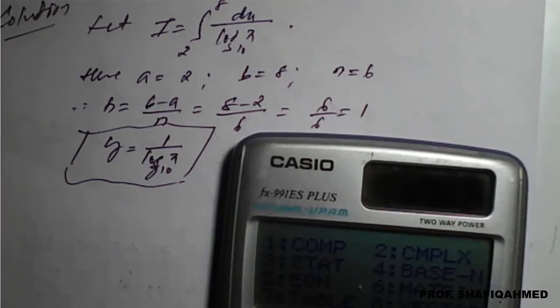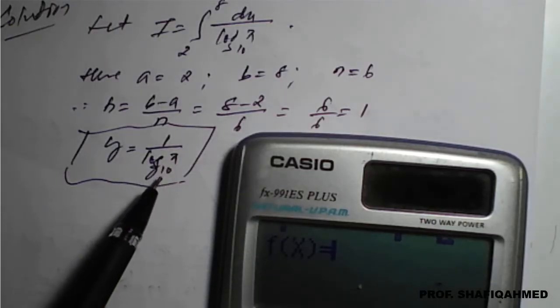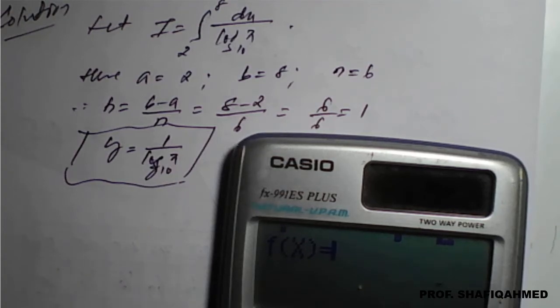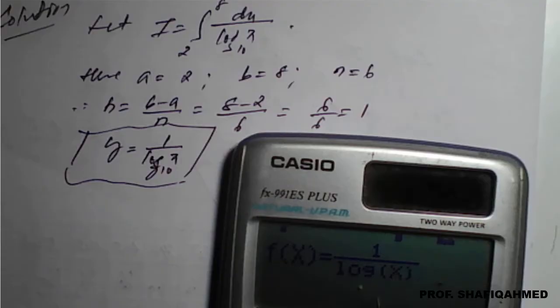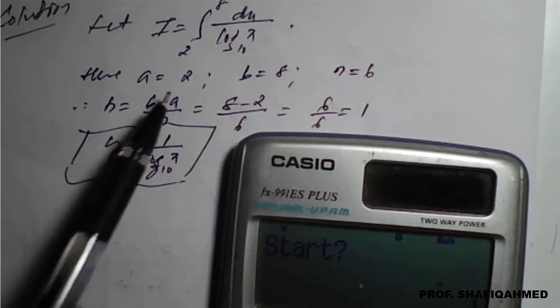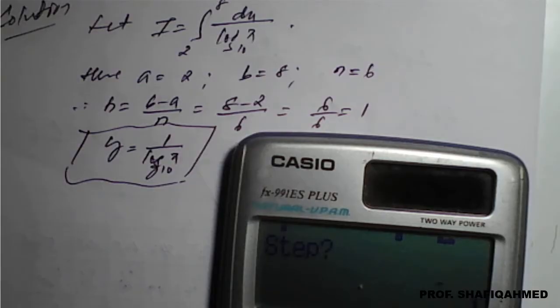We will use the calculator. Go to mode option 7 and type this. For log x to the base 10, we will use the symbol log directly, so enter fraction 1 divided by log of alpha x. If you use log, it is understood as base 10. If you use ln, it is base e. For starting value enter 2, end value is 8, and step size we got 1, so press 1.